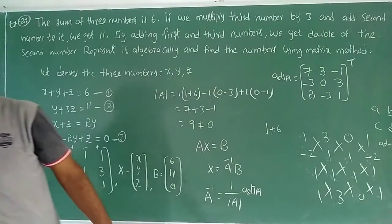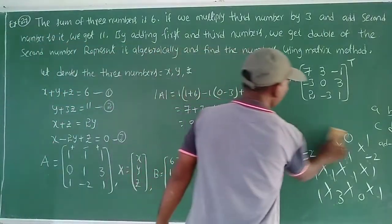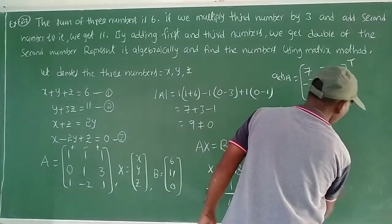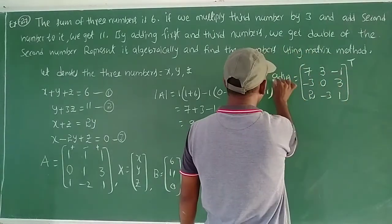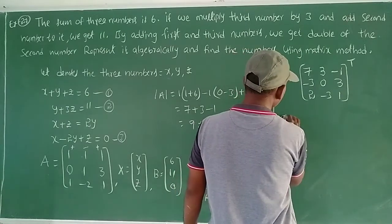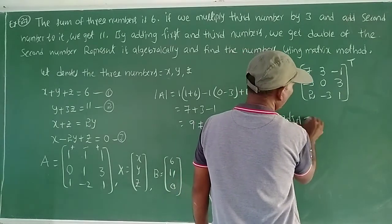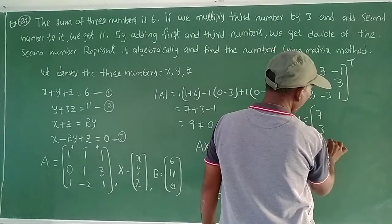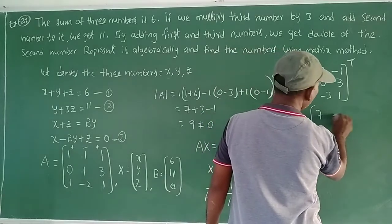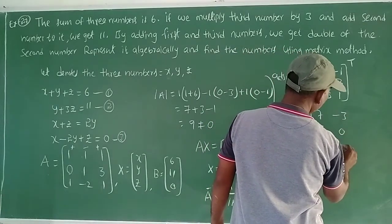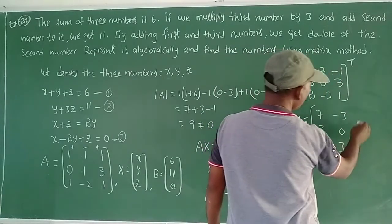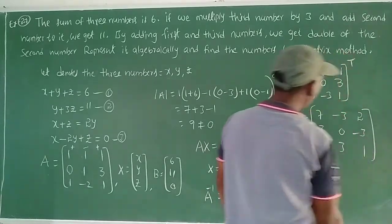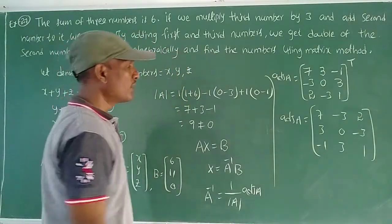This is the transpose step. Row changes to columns, column changes to rows. Adjoint A equals: first row becomes first column giving 7, 3, minus 1; second row: minus 3, 0, 3; third row change to third column: 2, minus 3, 1. This is adjoint A.